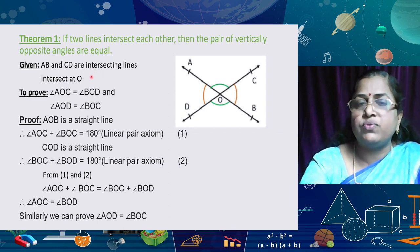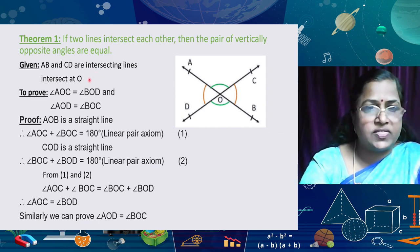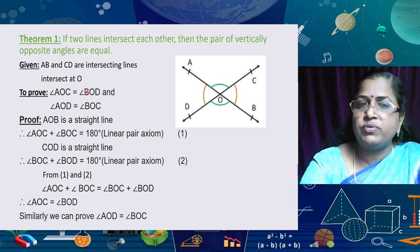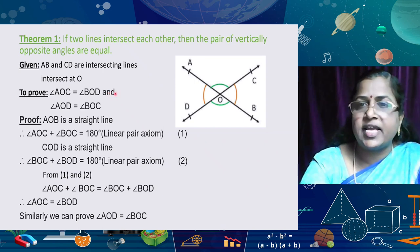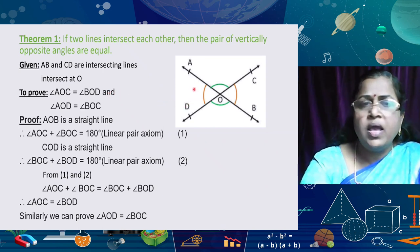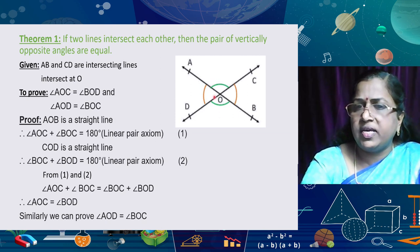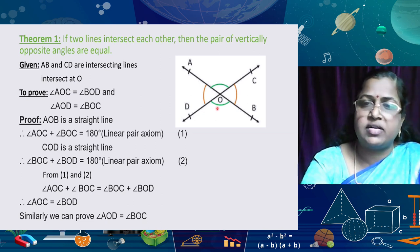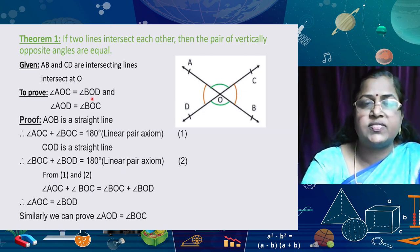From the figure: Given — AB and CD are two intersecting lines intersecting at O. To prove: vertically opposite angles are equal, that is, angle AOC = angle BOD, and angle AOD = angle BOC.